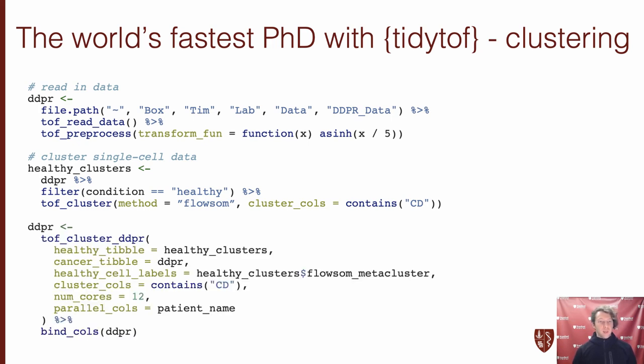And then after that, we can pass the healthy clusters we just identified into the TOF cluster DEEPER verb, which will bin each cancer cell into the healthy cluster that it's most similar to using something called Mahalanobis distance. For speed, I'm able to set this to run in parallel on 12 cores of my computer, and then I can bind the ultimate cluster assignments to the original input tibble for something that is very tidy and compact.